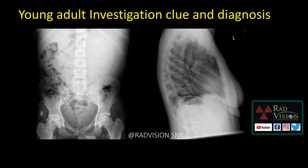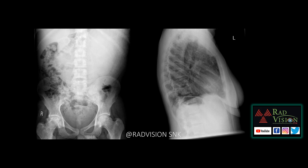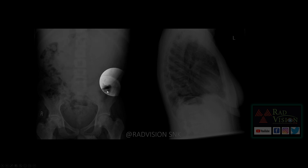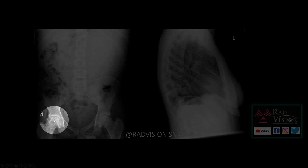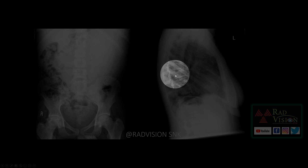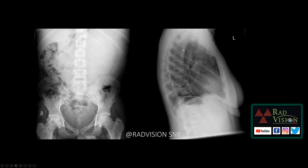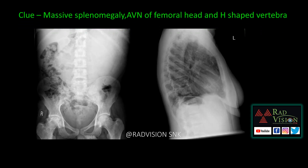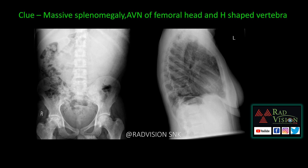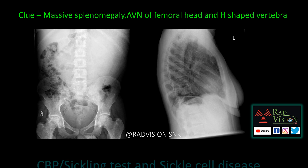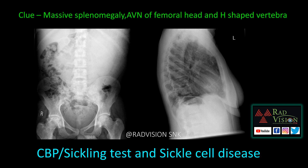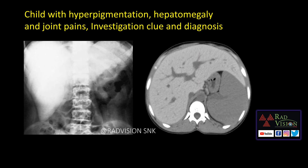Next case: a young adult. The clue here is massive splenomegaly, avascular necrosis of the right femoral head, and H-shaped vertebrae with central depression. The investigation to advise is CBC with sickling test, and the diagnosis to suspect is sickle cell disease.